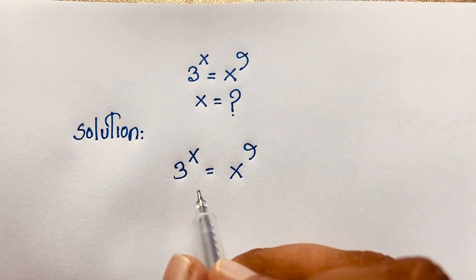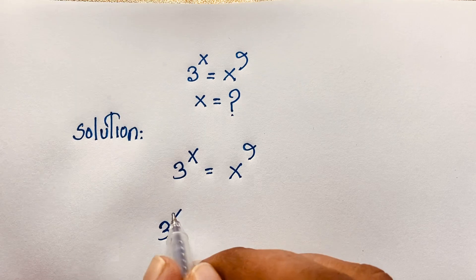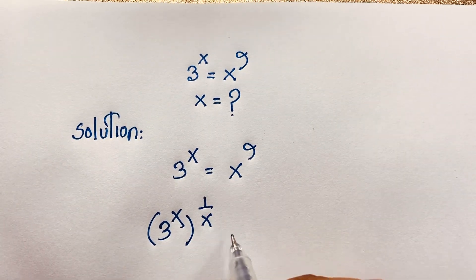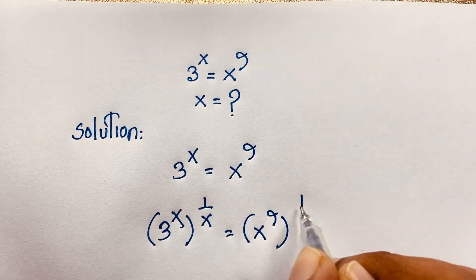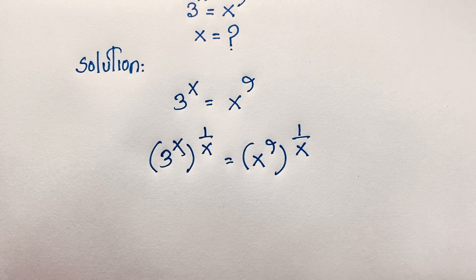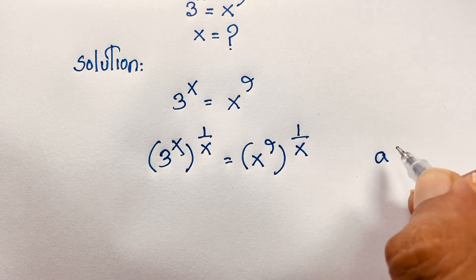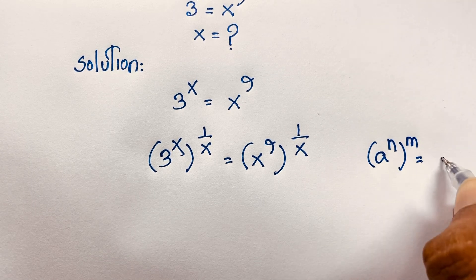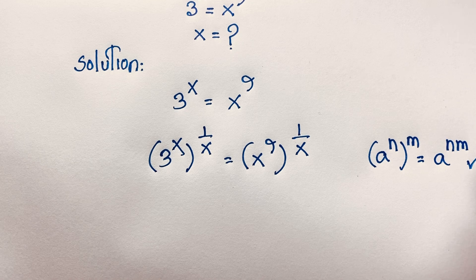First of all, I apply exponent 1 over x to both sides. So it will be: 3 to the power x, bracket power 1 over x, is equal to x to the power 9, bracket power 1 over x. According to the exponential formula, we know that a to the power n, bracket power m, equals a to the power n times m.